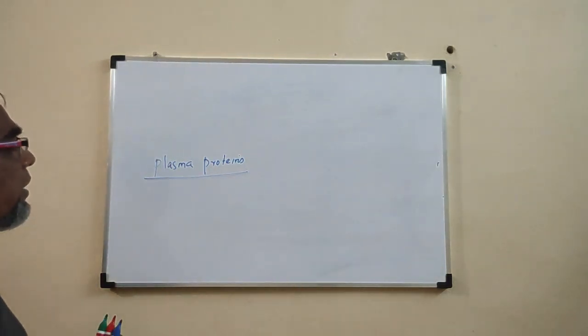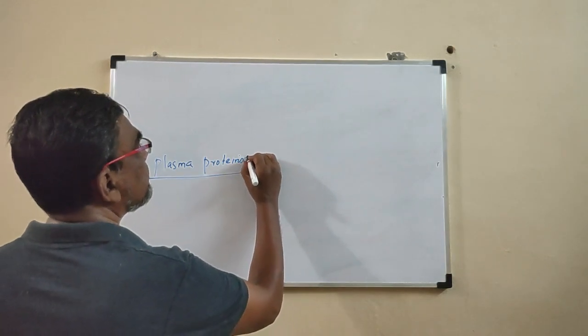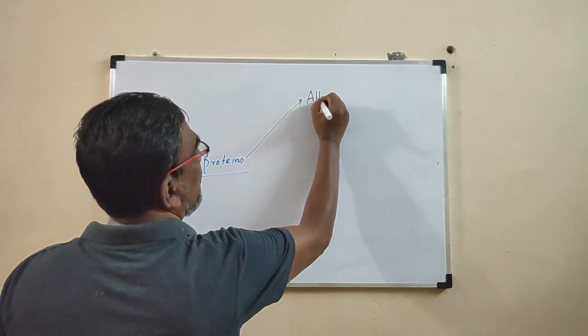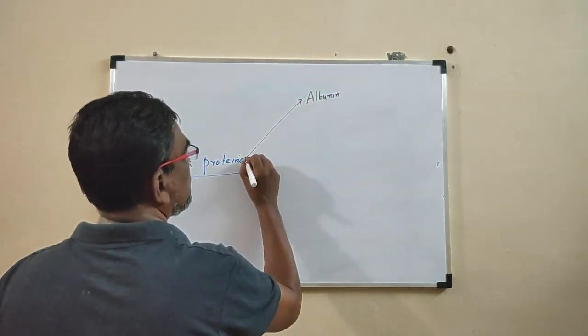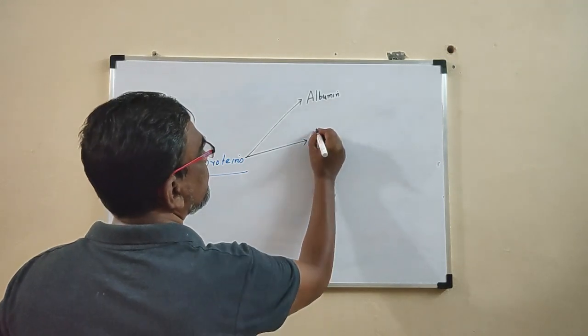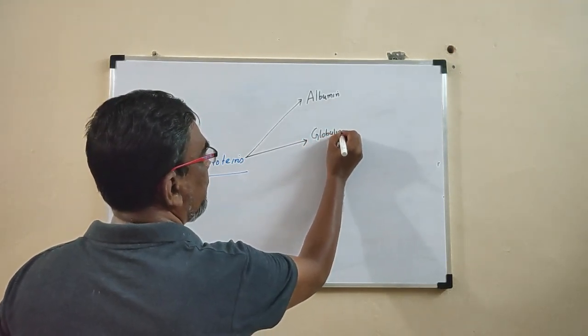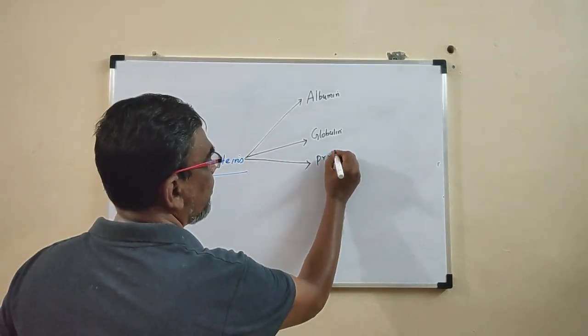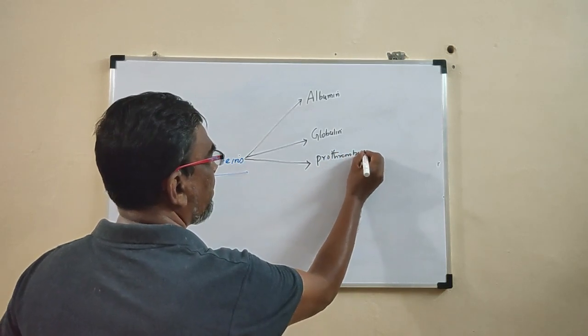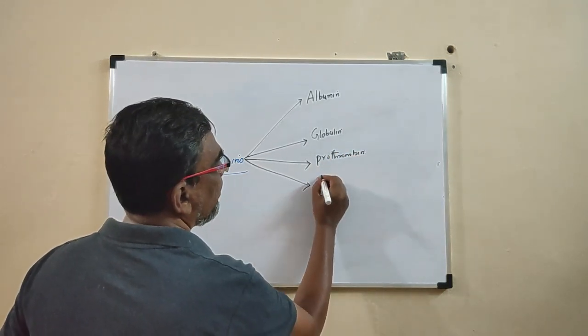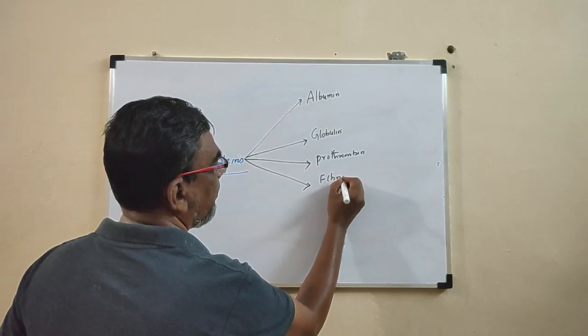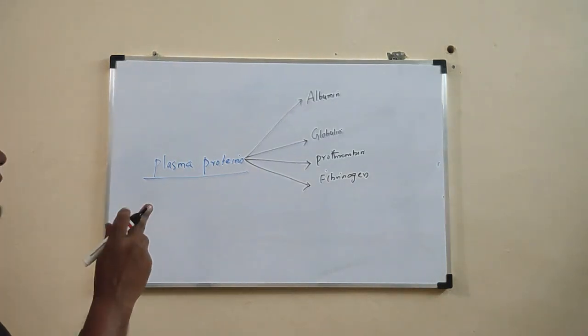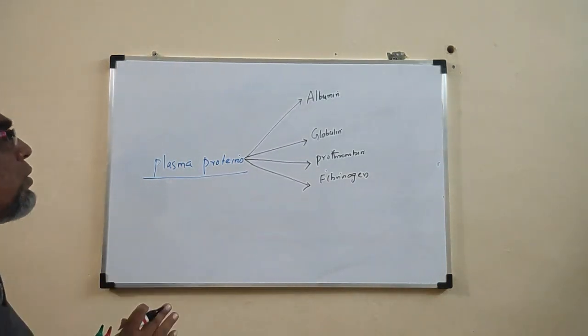So what is plasma proteins? What are the functions? We will discuss. What are the proteins present in the plasma? Especially, there are four types of proteins. One, albumin. Two, globulin. Three, prothrombin. Four, fibrinogen. So these are the four proteins present in the plasma, they are called plasma proteins.